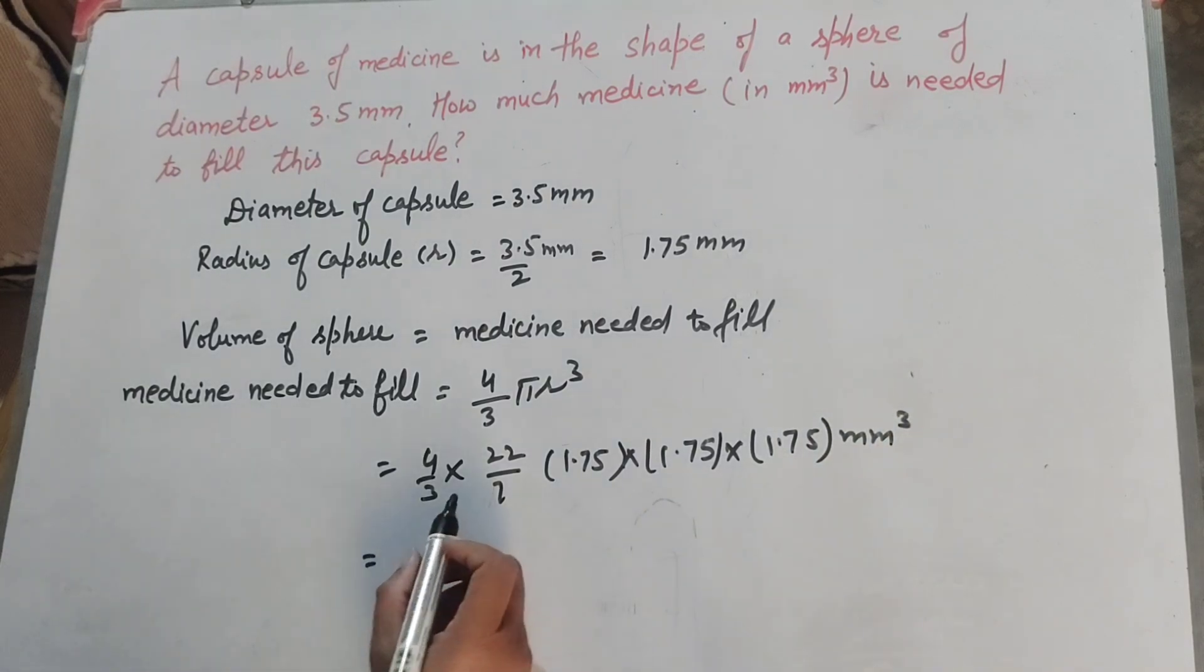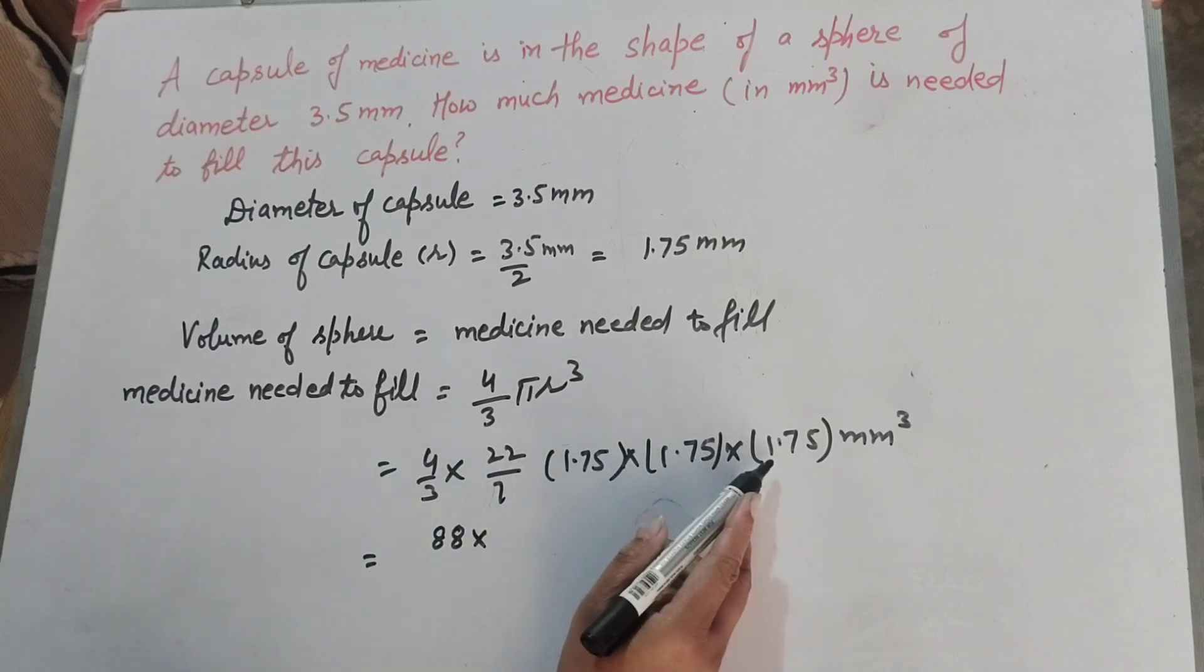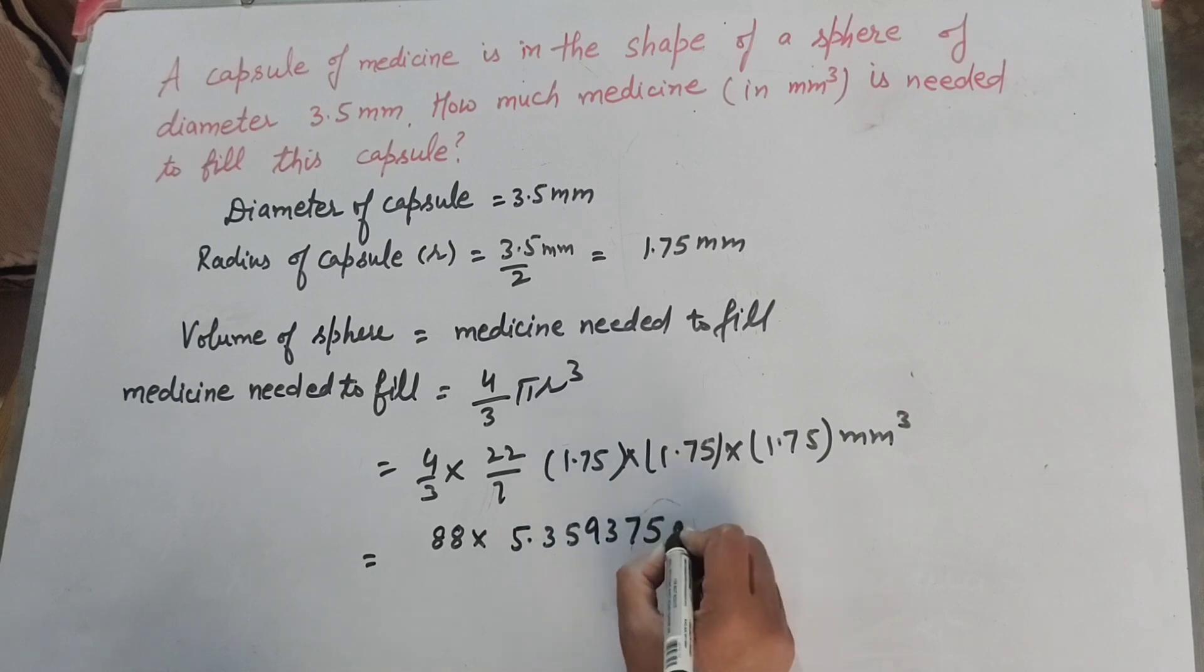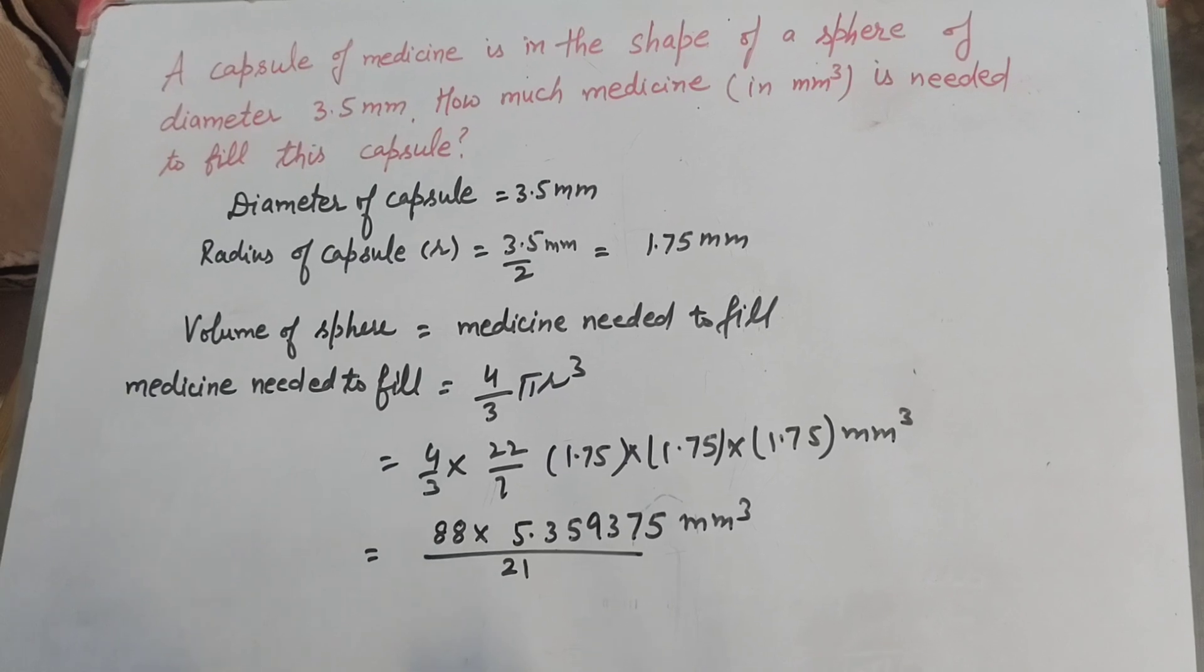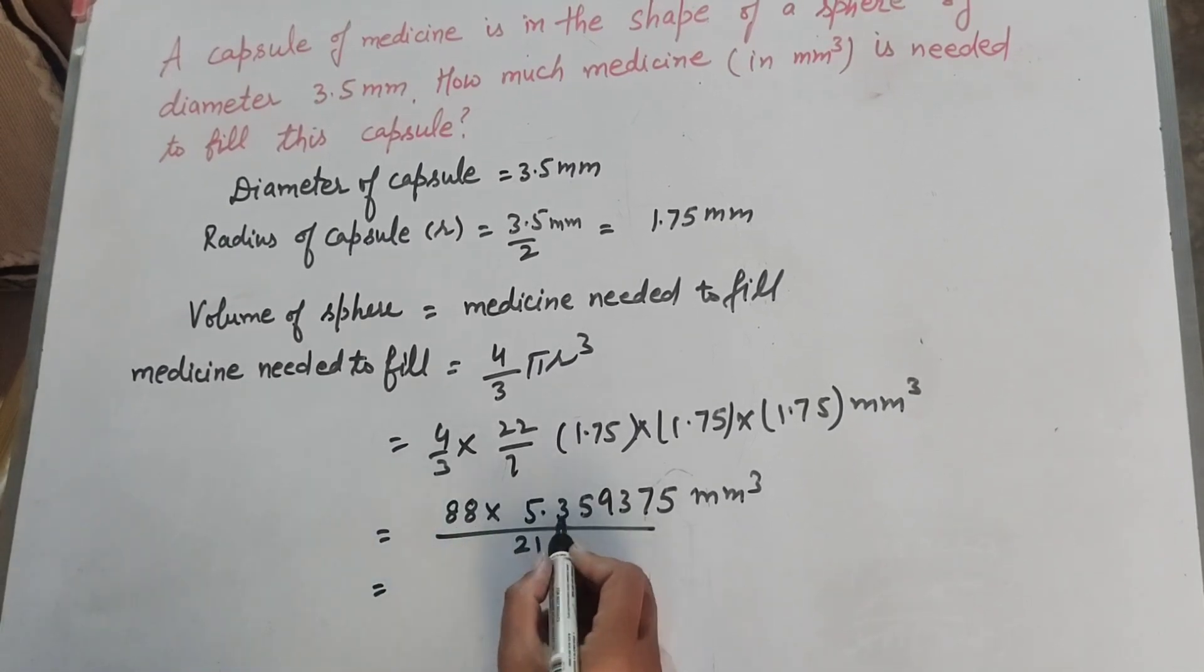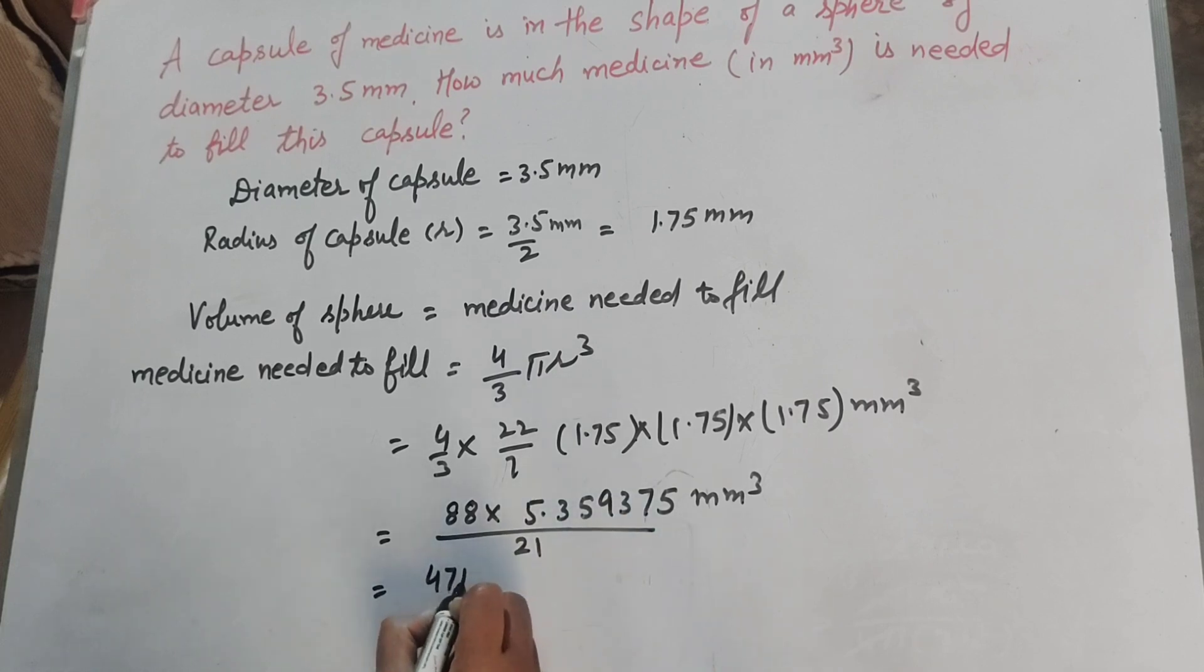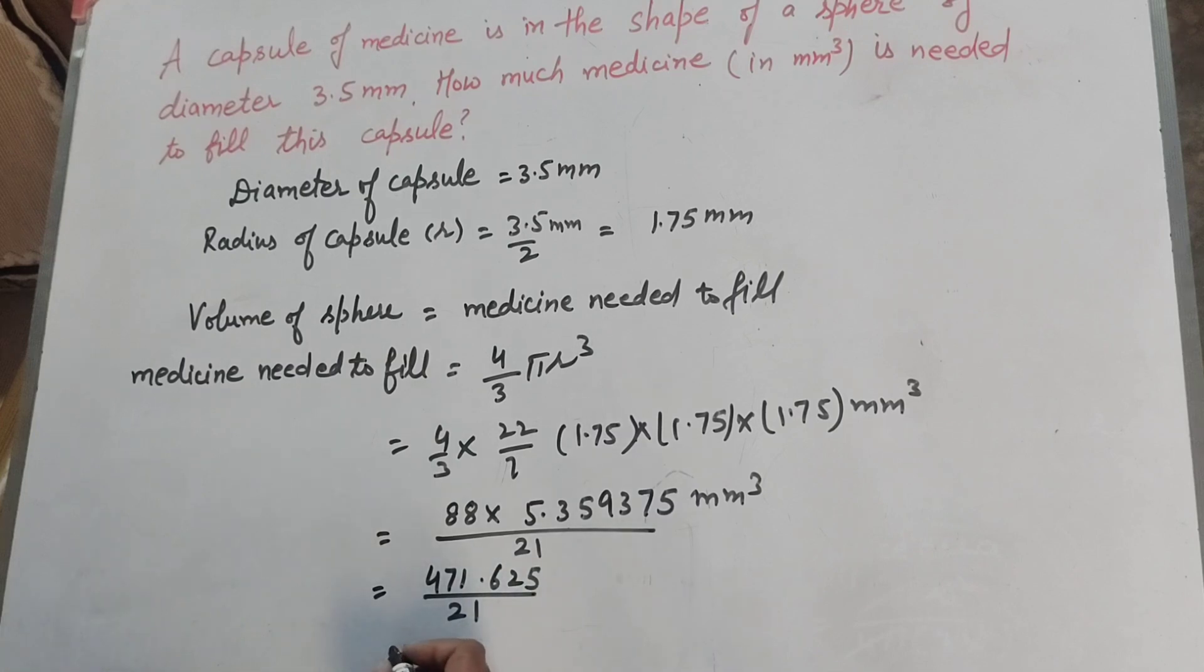So it is equal to 4 × 22, which is 88, times 1.75 × 1.75 × 1.75. On multiplying them we get 5.359375 mm³ over 21. Now 88 × 5.359375, on multiplying we get 471.625 over 21. Now 471.625 divided by 21, we get the answer equal to...